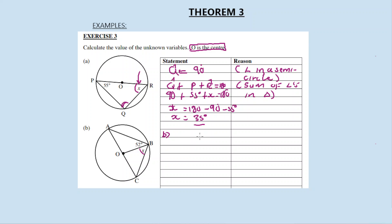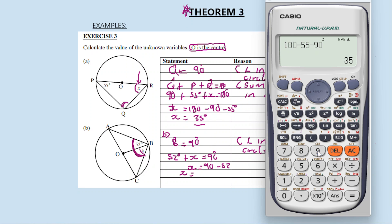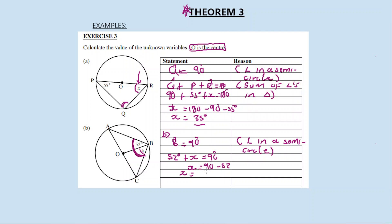For the second example, we need to find x again. Because of Theorem 3, angle P is equal to 90 degrees — angle in a semicircle. Therefore: 52 degrees plus x equals 90 degrees. x equals 90 minus 52. x equals 38 degrees. That's our answer for Theorem 3.